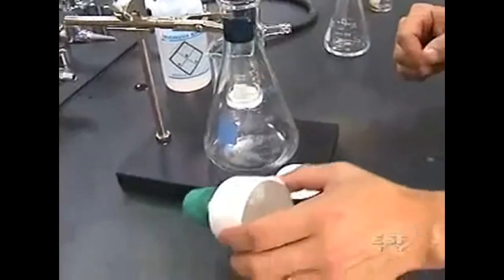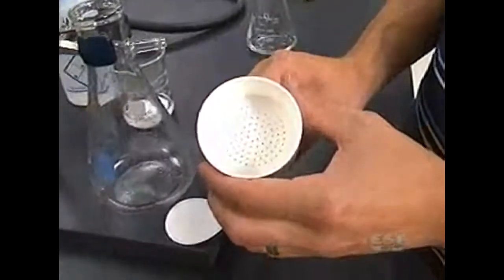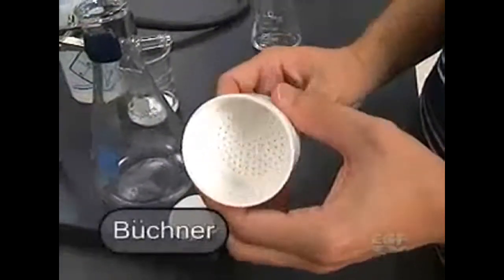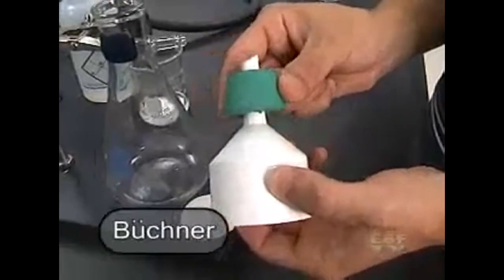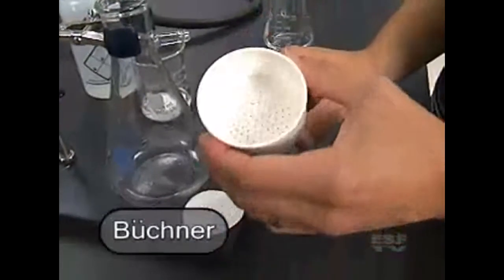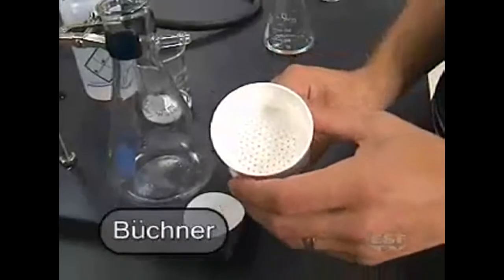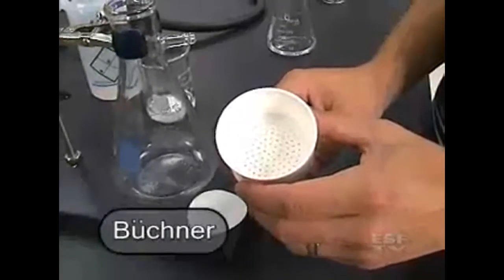We of course have another funnel. In this case, instead of just a regular glass funnel, we have what's known as a Buchner funnel. On the bottom we have a rubber stopper to form an airtight seal, and at the top we have a bunch of holes that are going to let the solution pass through it.